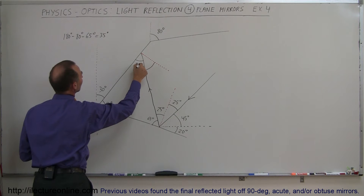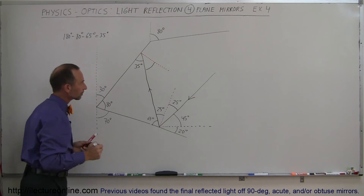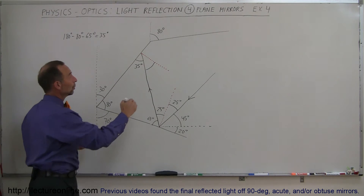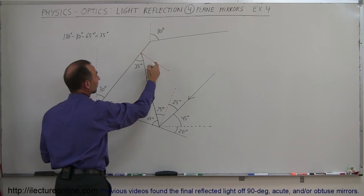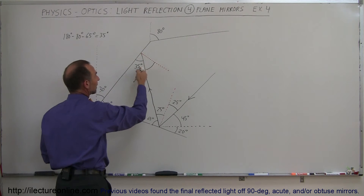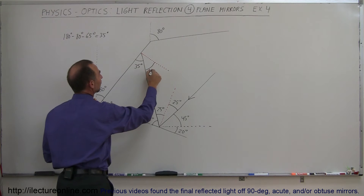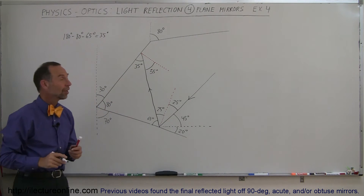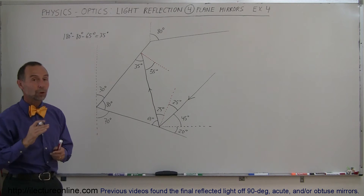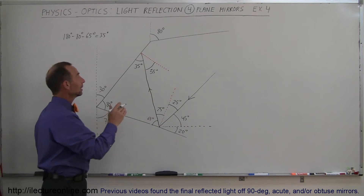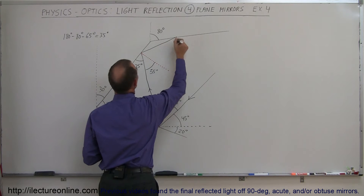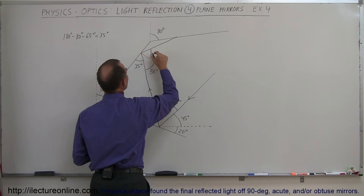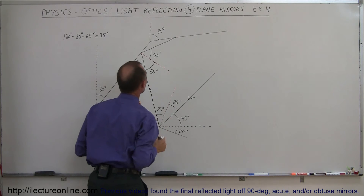That means this angle must be 180 minus 80 degrees minus 65 degrees. So 180 minus 80 is 100, minus 65 is 35 degrees — this is a 35 degree angle. Since we know this line is normal or perpendicular to the mirror, that must be a 90 degree angle, and 90 minus 35 is 55 degrees. So that must be a 55 degree angle of incidence, which means the reflected beam will also be leaving at a 55 degree angle relative to the normal.